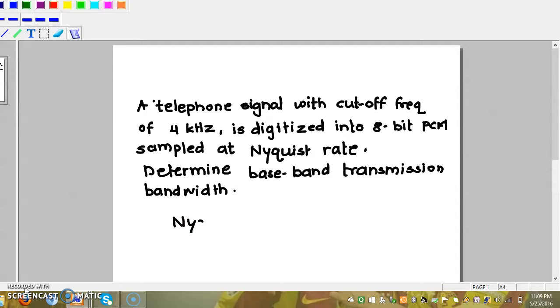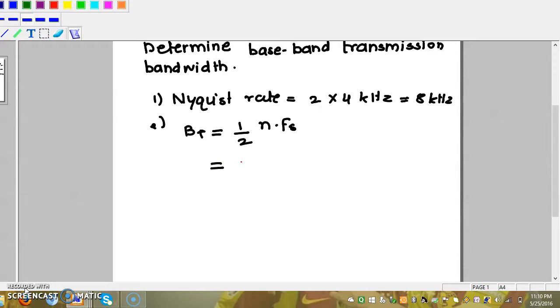Here, Nyquist rate is equal to 2 × 4 kHz, that is 8 kHz. And the bandwidth required, Bt, is equal to one-half of N × Fs, where N is equal to 8, the number of bits in the PCM. So, one-half × 8 × 8 kHz equals 32 kHz, the bandwidth required.